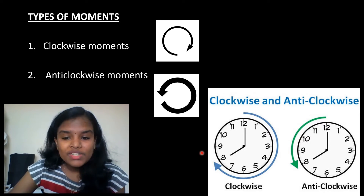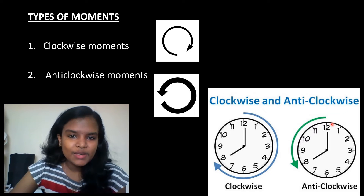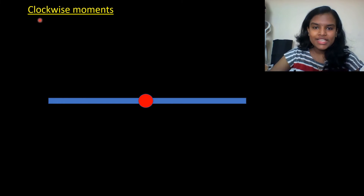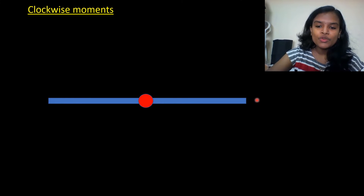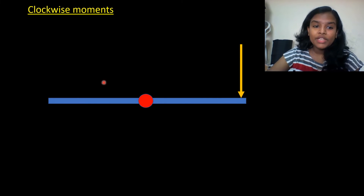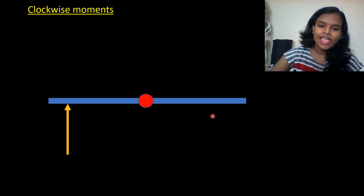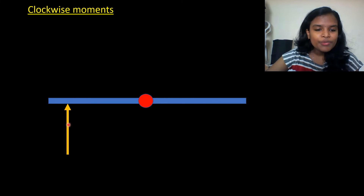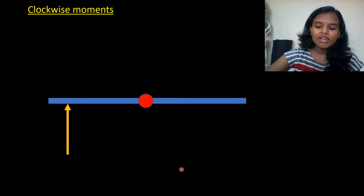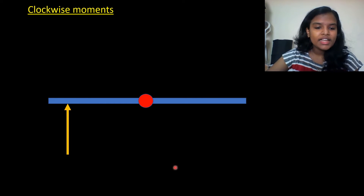The anticlockwise moment is the opposite direction of the clockwise moment. The rotating effect goes in the anticlockwise direction. In this example, there is a force where you can rotate the body in the clockwise direction. So, this force causes the beam to rotate in the clockwise direction.